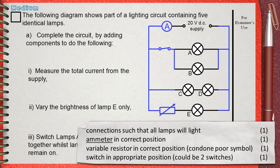Let's see the mark scheme. The examiner offers 4 marks for this question. The first mark is for connections such that all lamps will light. If one of the 5 lamps is not correctly connected, so your circuit shows that this lamp will be always off, this will cause you to lose one mark.